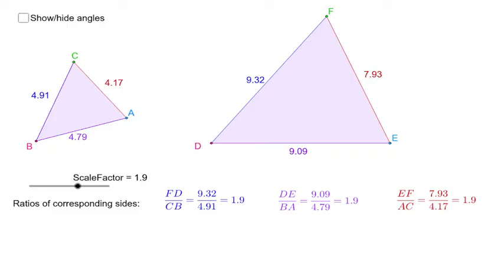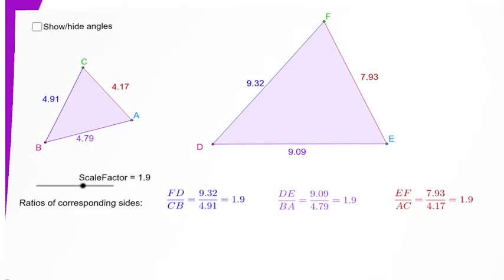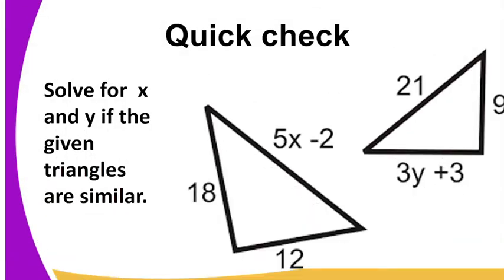So, we've come to the end of our lesson. And I expect you to check this assignment. Solve for X and Y if the two triangles are equal. Like we've said, if two triangles are equal, their corresponding lengths are proportional. Are we together?